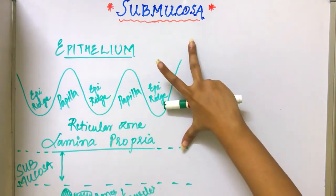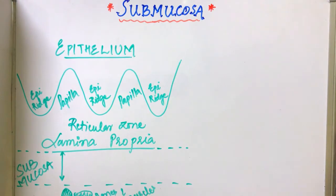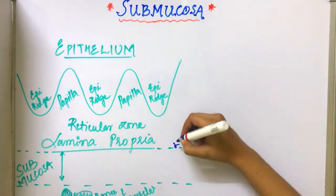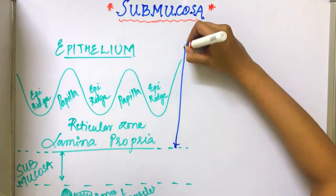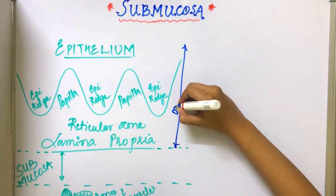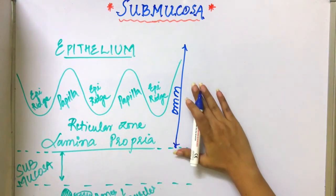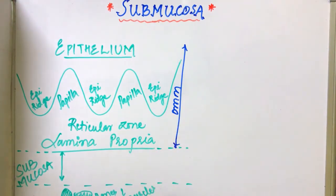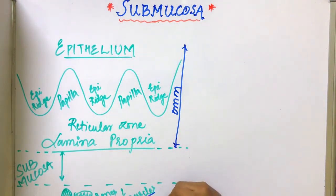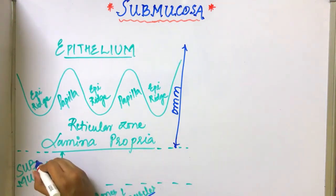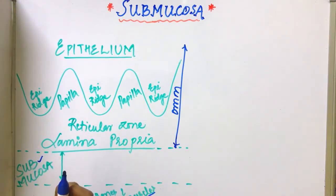Below the lamina propria is the submucosa. What it does is it attaches the oral mucous membrane to the underlying structures. The underlying structures are the bones and the muscles.